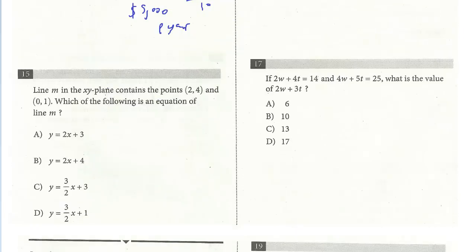Let's take a look at Question 15. Line M in the xy-plane contains the points (2,4) and (0,1). Which is the following equation of line M? Very common problem. You should be proficient in doing this just because it comes up in a lot of different ways. You have two points. The first step is to find the slope. So we'll do y2 minus y1, so 4 minus 1 over x2 minus x1. The slope is 3 over 2. So right away, you can start your equation: y equals 3 halves x.